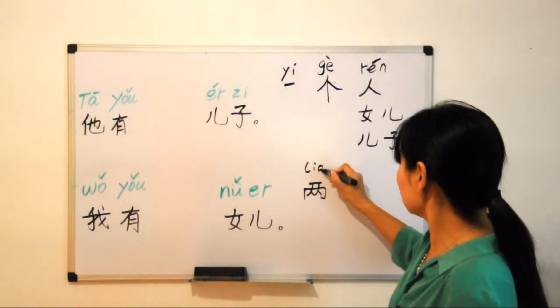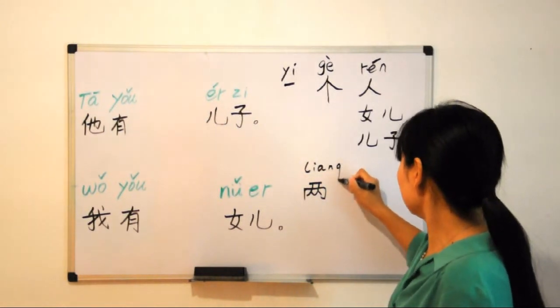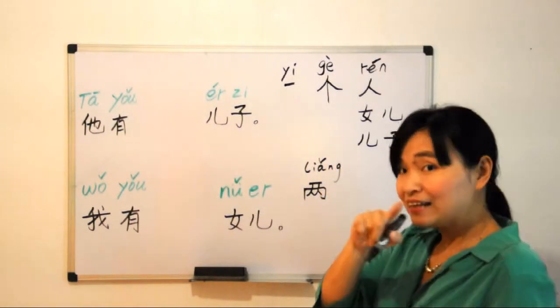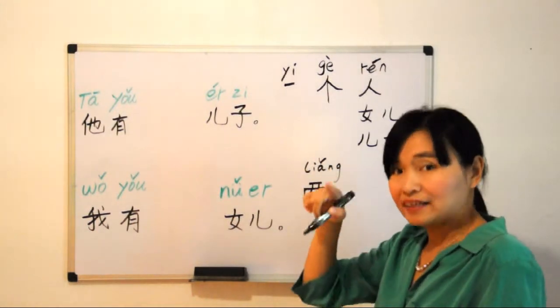两 - which tone? Can you tell me? 两 (liǎng), third tone. 两.